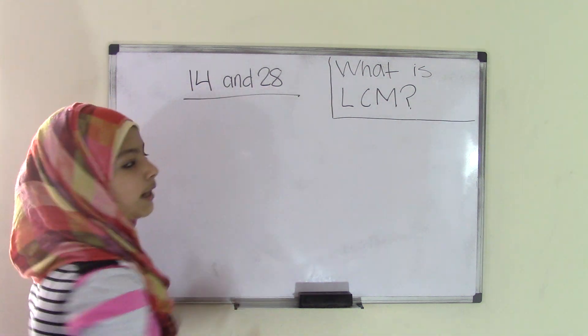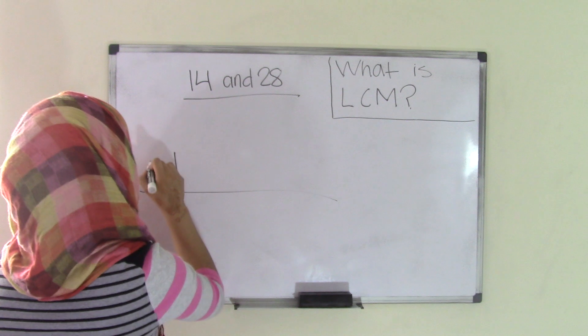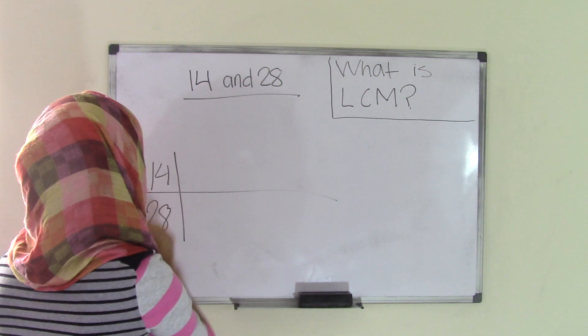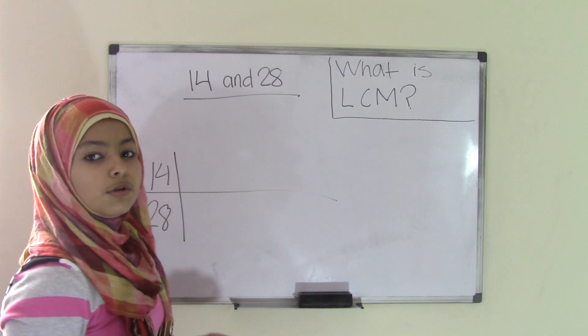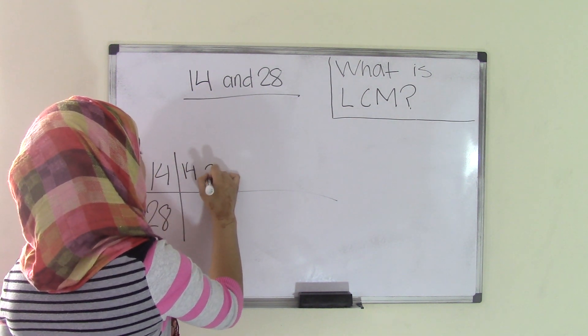Okay, these are pretty big numbers, right? So I'm going to do the same thing, make a diagram or also call it a table, 14 and 28. And first I'm going to list a few multiples for 14. So 14 times 1 is 14, times 2 is 28.